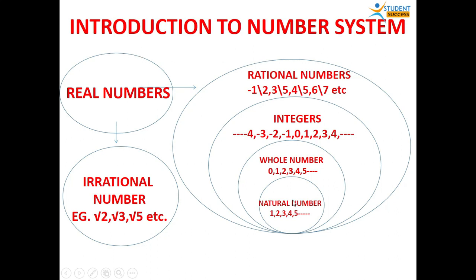The first category is natural numbers. These numbers are called natural numbers because they occur naturally in nature. These numbers are known as counting numbers. They start from 1, 2, 3, 4 and so on. So the smallest natural number is 1.